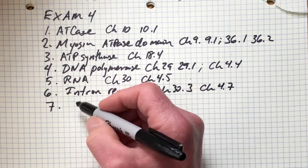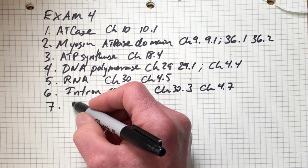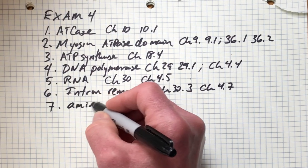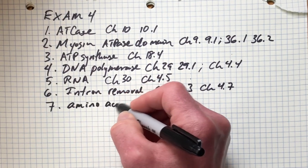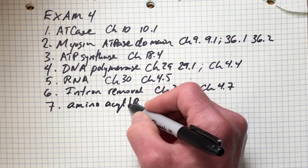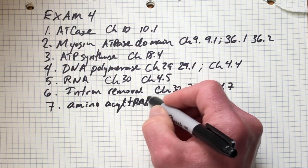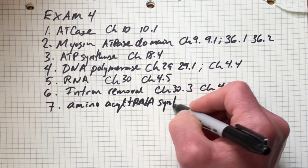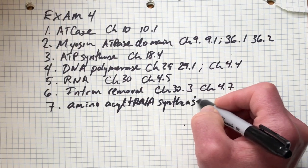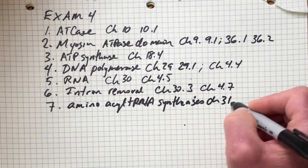Next, we'll be looking at the genetic code and how that is created by aminoacyl tRNA synthetases. Chapter 31.2.